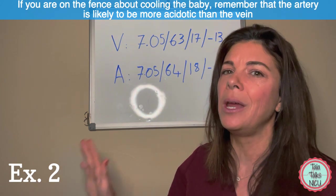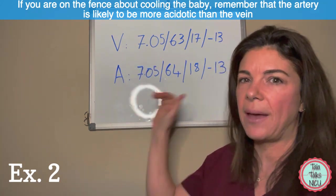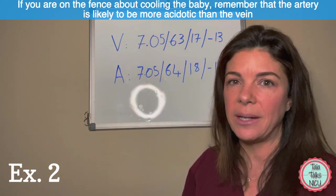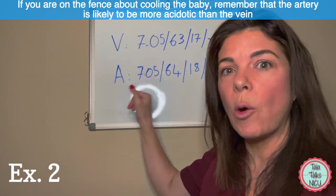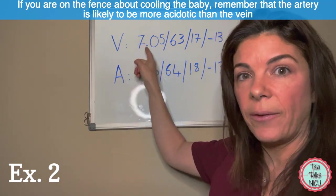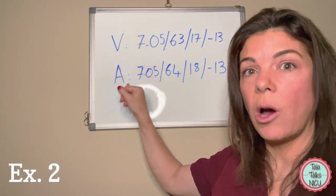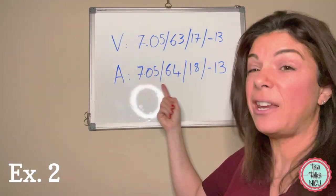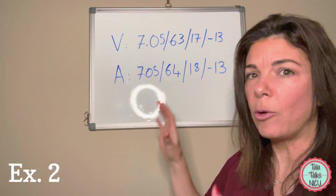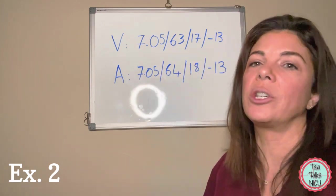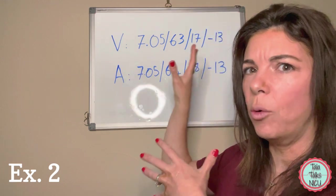The way that I would interpret this, if you're hedging whether to cool this baby or not, and honestly you don't have to have blood gases that are pH less than 7 and base of minus 16 to cool, really the most important thing is an event and the neurological exam. But for the purposes of this discussion, if you're wondering whether you should cool this baby or not, you probably shouldn't get this blood gas and say 'we don't quite meet criteria.' Because we know that the arterial is always going to be more acidotic than the vein.